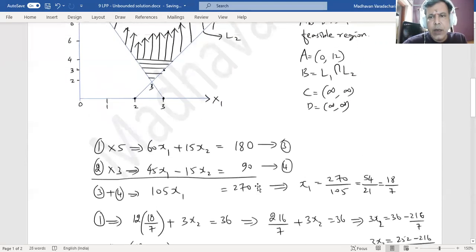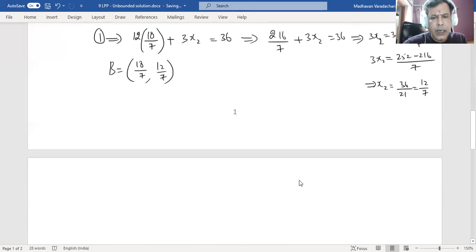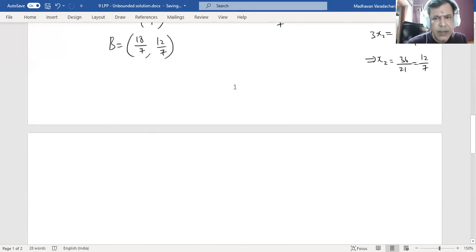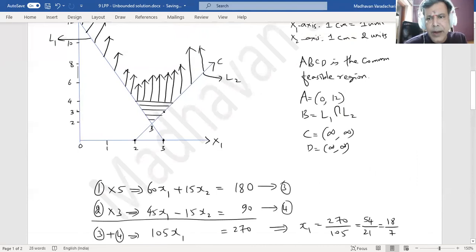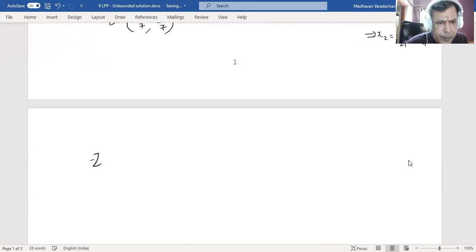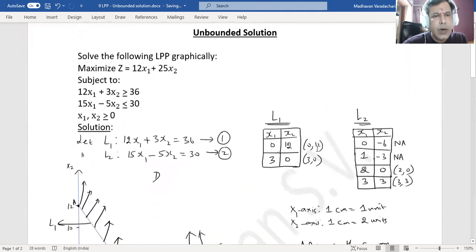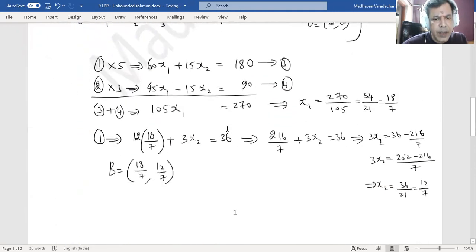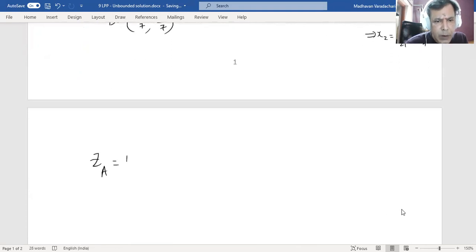So now we got all the points. Let us calculate the corresponding Z values. Means basically these are the corner points of the feasible region. Now Z of A is what? What is Z? Z is the one which is initially given: 12x₁ + 25x₂. Now let us substitute.